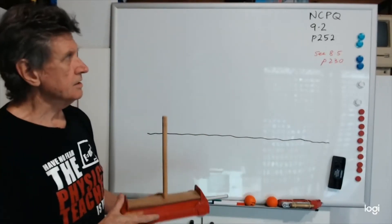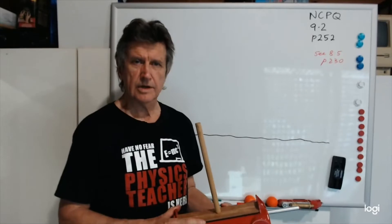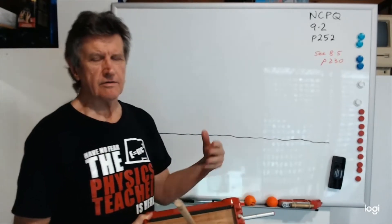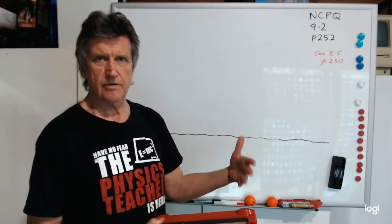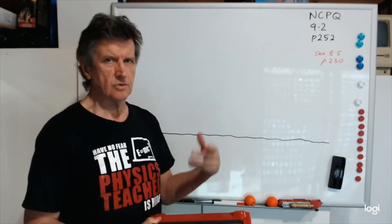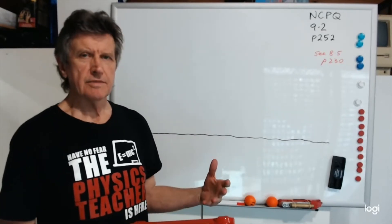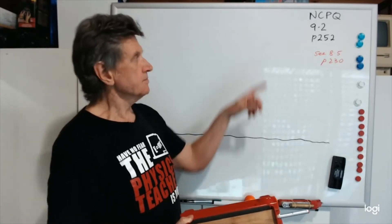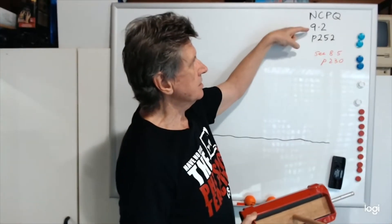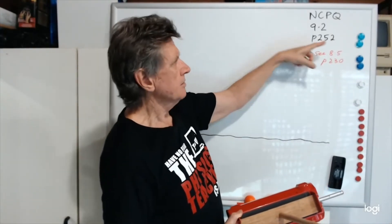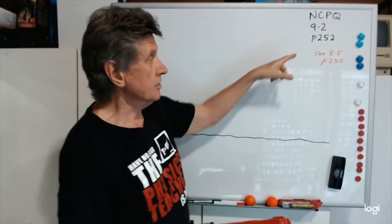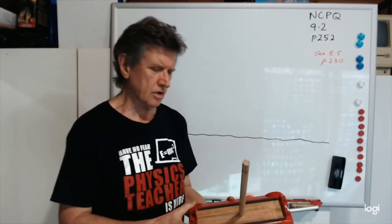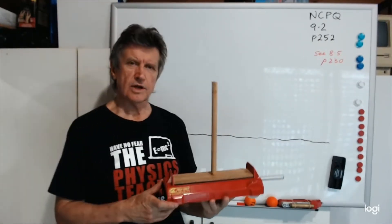In this video, we're going to look at relative motion again, specifically the constancy of the speed of light. Light travels at 3 × 10⁸ meters per second, or c. But how is that measured, and can it change depending on the motion of the observer? This belongs to textbook section 9.2, page 252, and we'll also refer to section 8.5, page 230 on light.